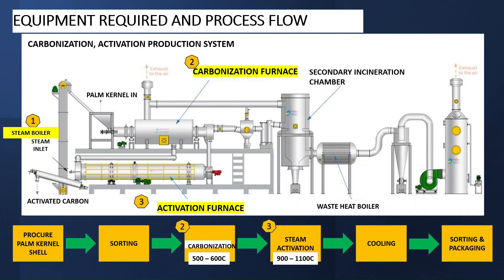The next stage is the activation stage, and this is done using steam from the steam boiler. The charcoal produced in the previous step is sent to the activation furnace, where steam is introduced and the charcoal is heated to a temperature of between 900 and 1100 degrees centigrade. Then it's cooled down using the cooling system or by allowing it to cool. This process produces the activated carbon. You can decide to sort or just bag based on customer demand. After bagging, you palletize, store, or send to the customer.